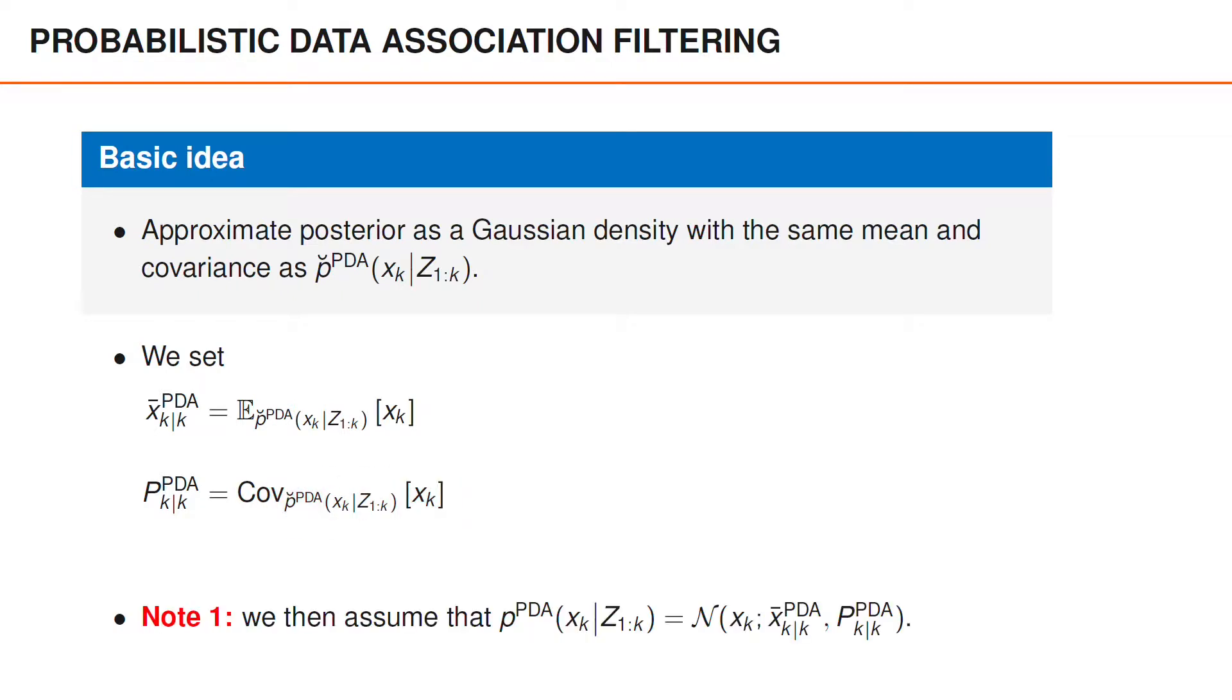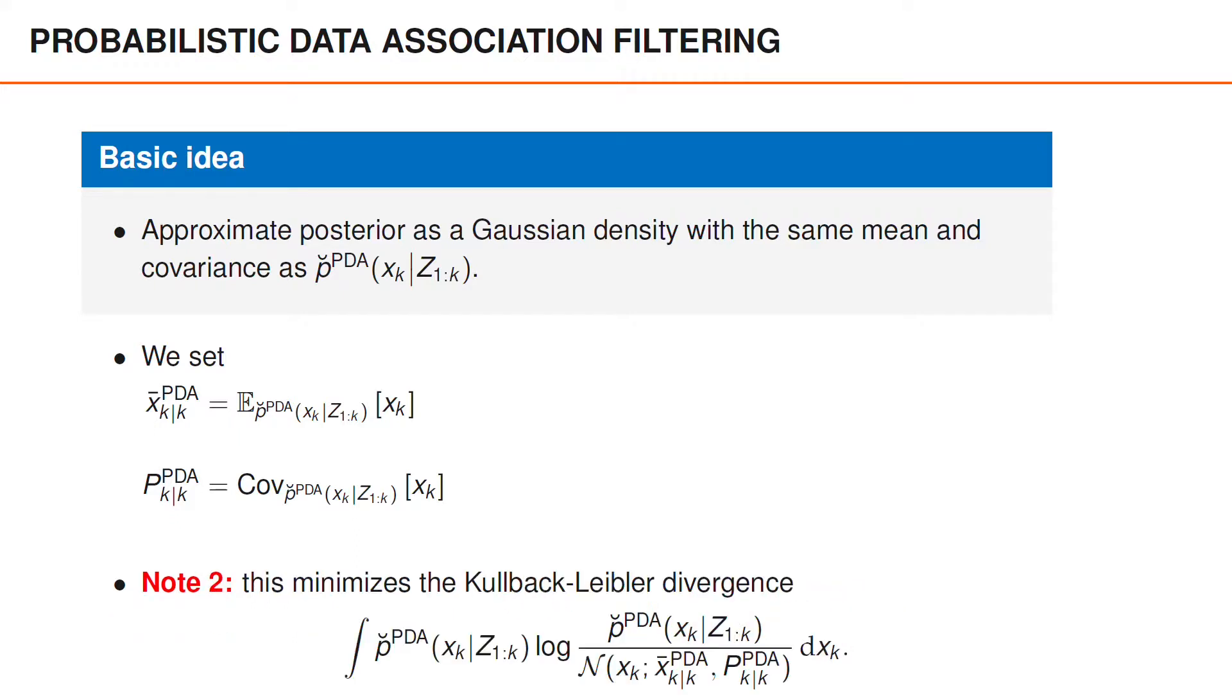Of course, we then approximate the posterior distribution as Gaussian with this mean and this covariance. One can show that this minimizes something called the Kullback-Leibler divergence between p-breve and the Gaussian approximation. The Kullback-Leibler divergence is commonly used to measure similarity between densities and this result tells us that this is the best among all Gaussian approximations in this specific sense. Still, this is mostly a side note and if you haven't heard about the Kullback-Leibler divergence before, you can ignore this comment.